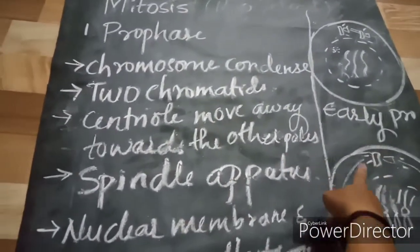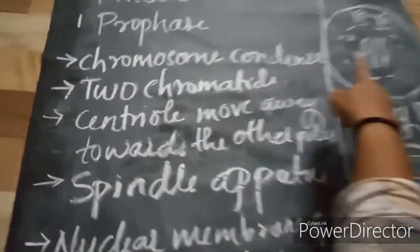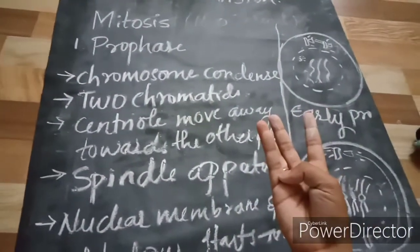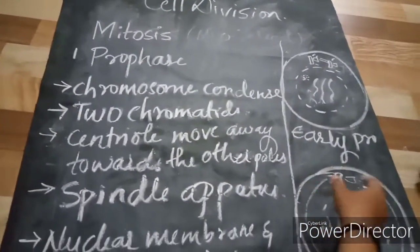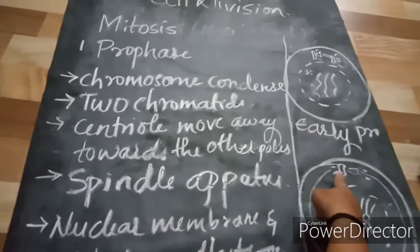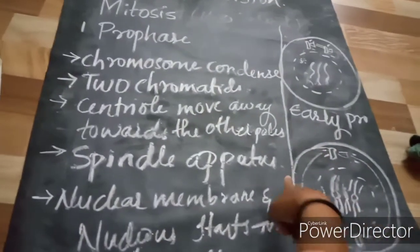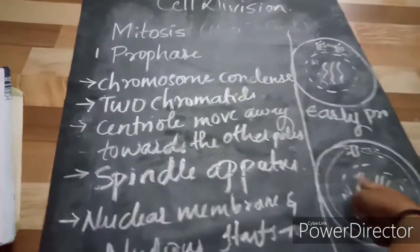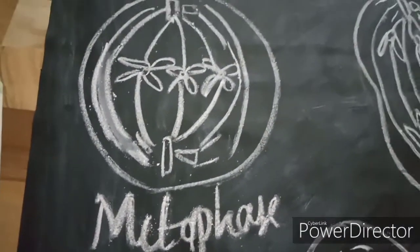The spindle fibers along with the asters are known as the spindle apparatus. The nuclear membrane and the nucleolus start to disappear during prophase. To summarize prophase: chromosomes condense and two chromatids are held together by the centromere; centrioles move to opposite poles; asters form around centrioles; spindle fibers extend between the poles forming the spindle apparatus; and the nuclear membrane and nucleolus disappear.